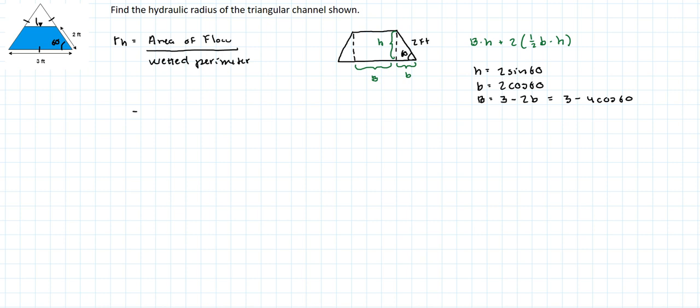So let's get back to our expression for the hydraulic radius. So we said capital B, which is three minus four times cosine of 60, times H, which is two times the sine of 60, plus two times one half, which is really just one, times two times the cosine of 60, times two sine of 60.